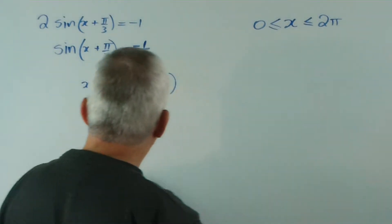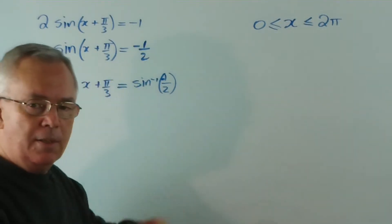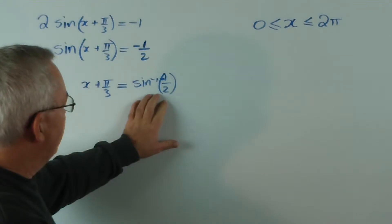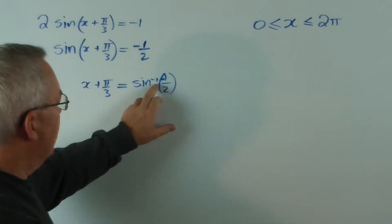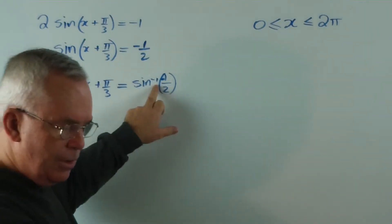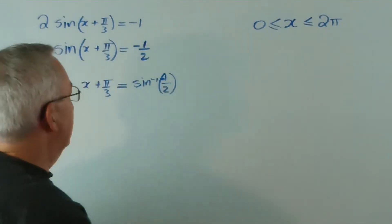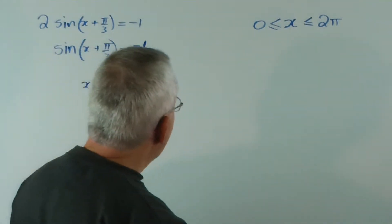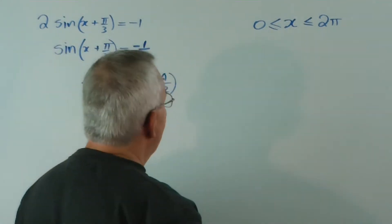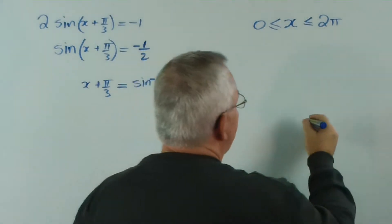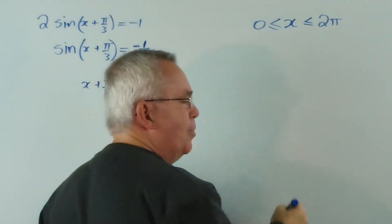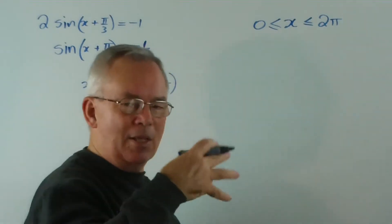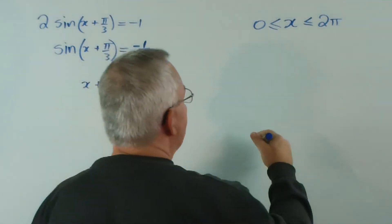Getting rid of the sine function by taking the inverse sine — that's what it's designed for. Now we're at a point — I'm not going to subtract the pi on three just yet. I want to look at this angle first. Remember, inverse trig functions are angles — they give us back the angle that was inside before we applied the trig function. What is this angle?